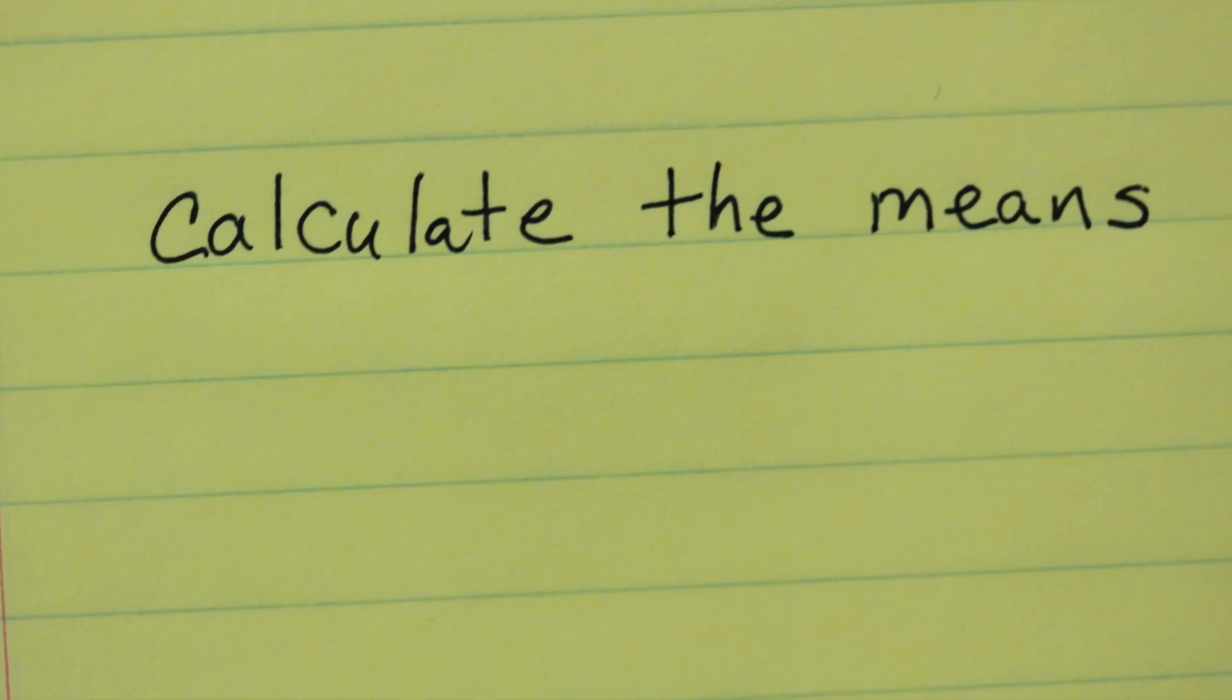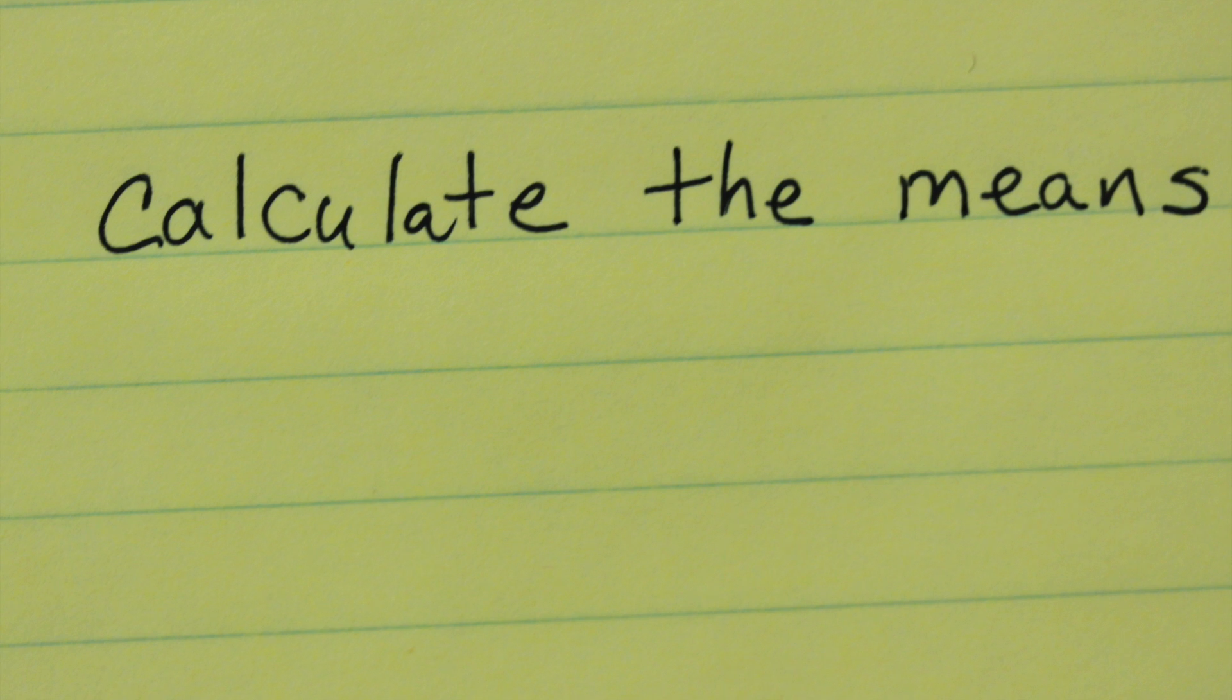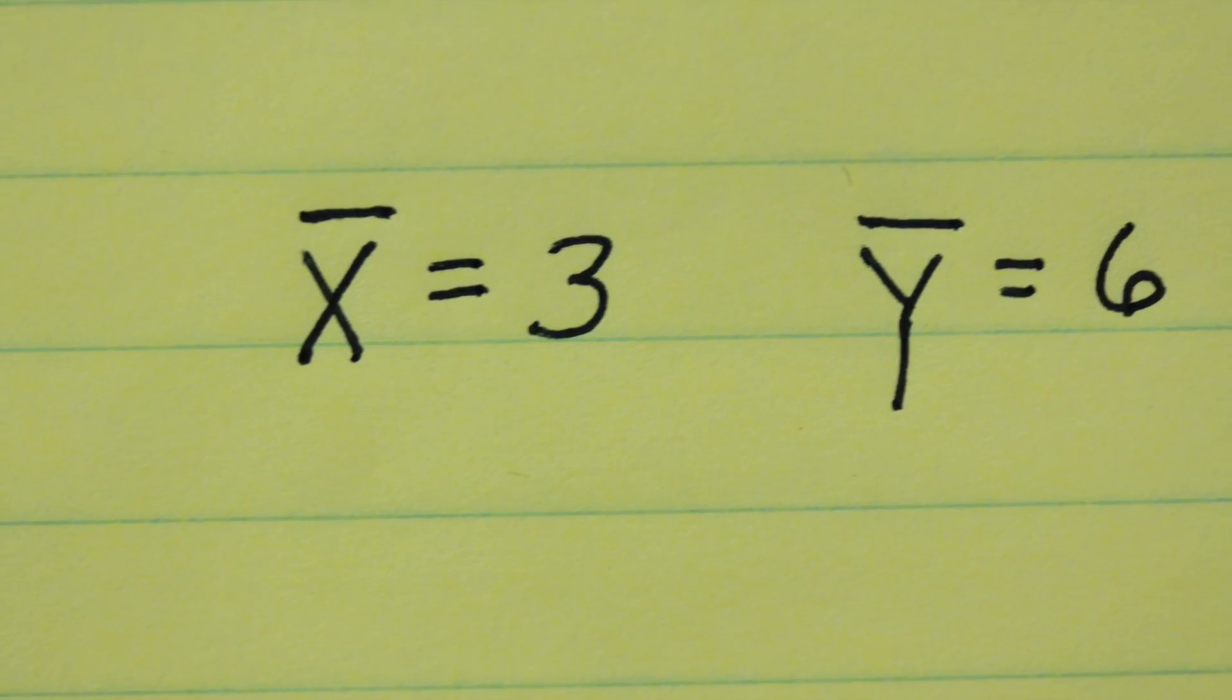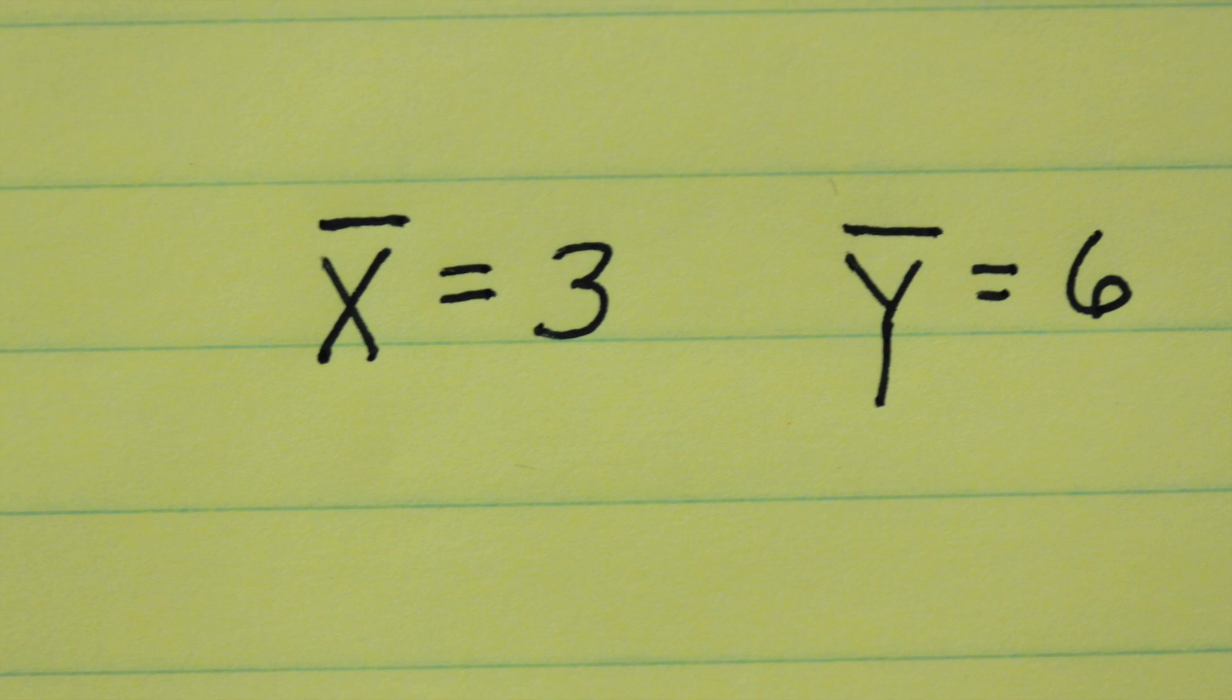To start with we need to calculate the averages of those. The average of those three numbers on the x side is equal to 3, and the average of those y numbers is equal to 6.